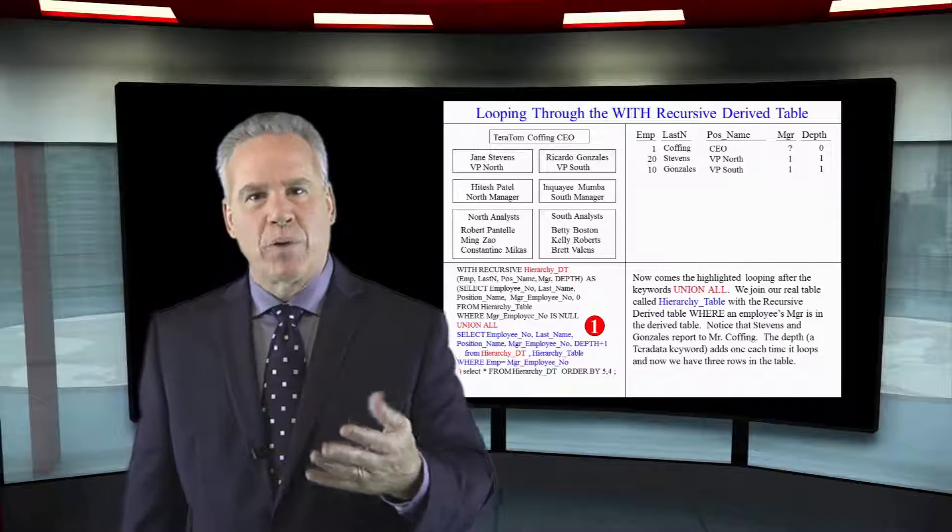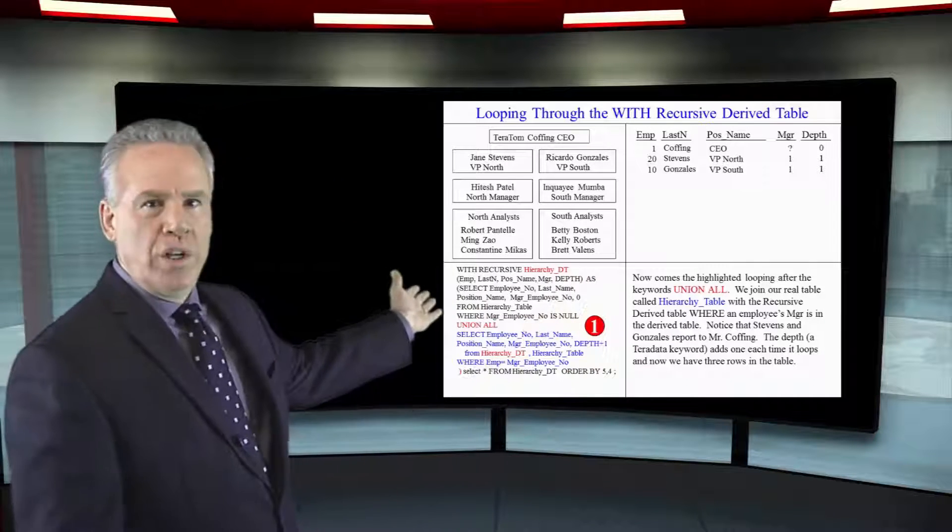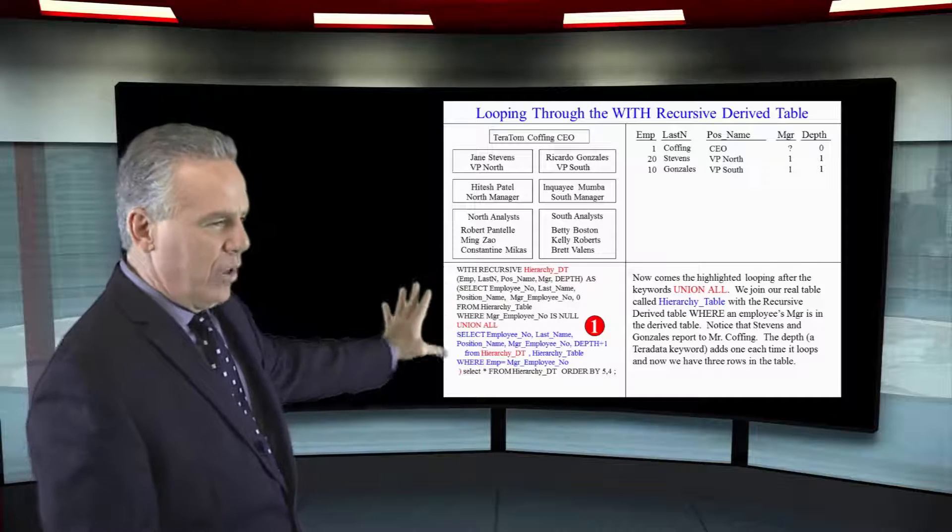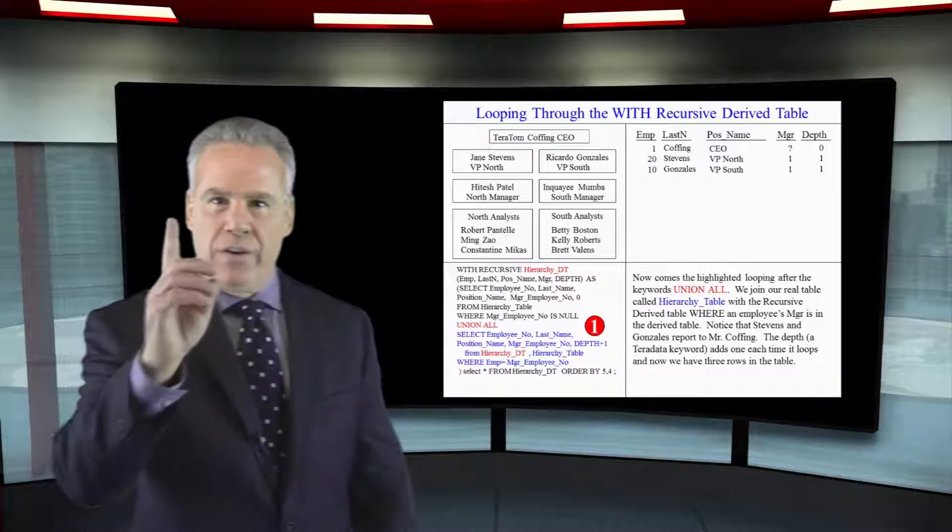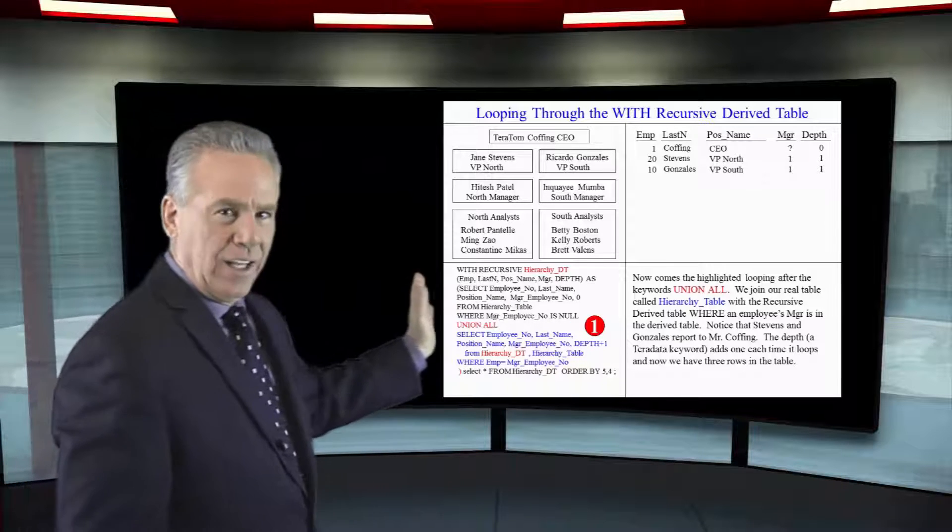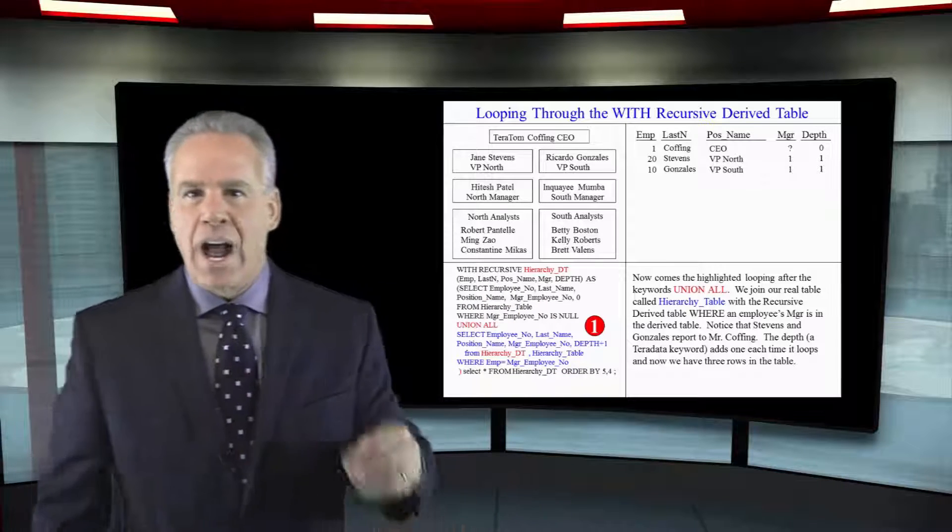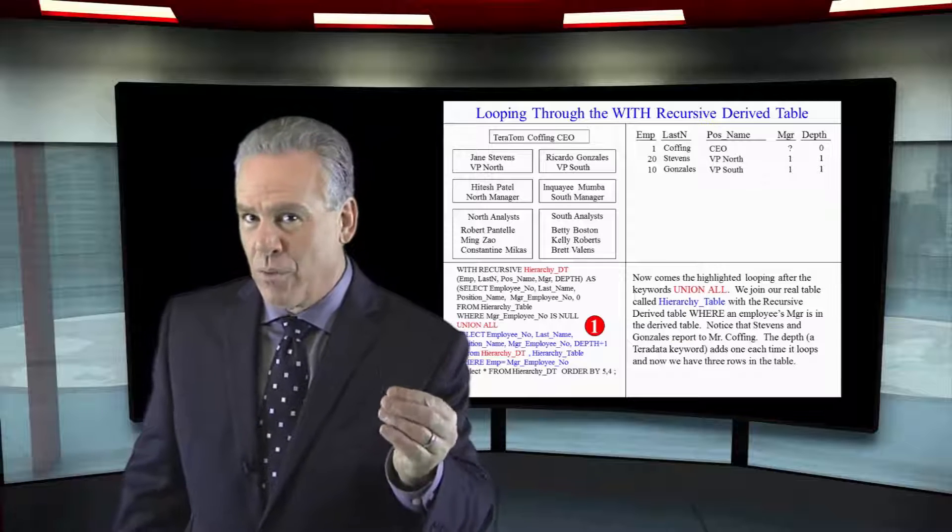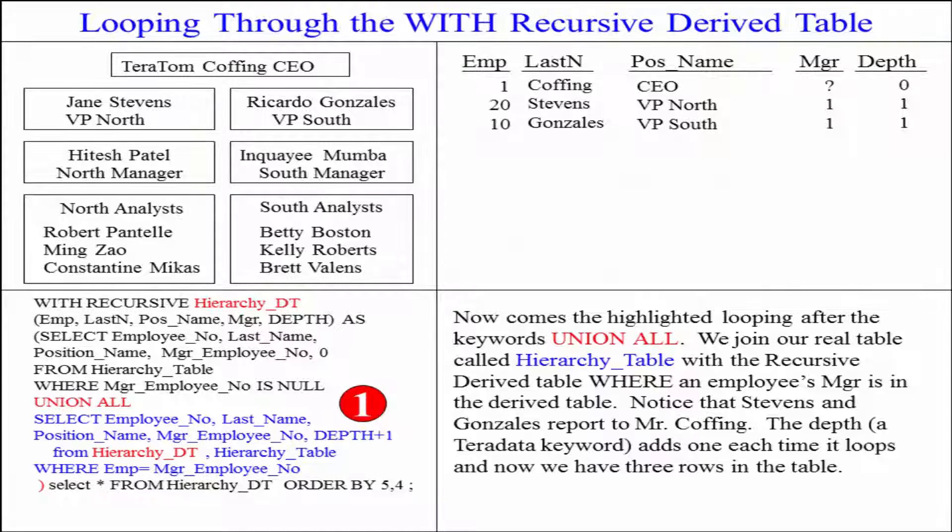Now we're going to go through a looping process and you can focus on the Union All statement and then the blue down here. This is the very first loop so we're going to actually select columns from our hierarchy table, the real table, and we're going to then join them to our derived table.